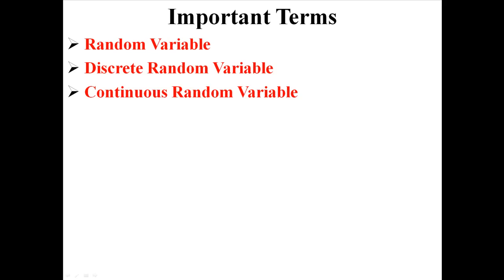So know that a random variable is a variable that has its value determined by a probability experiment and know that the values you get will indicate that you either have a discrete random variable or a continuous random variable.